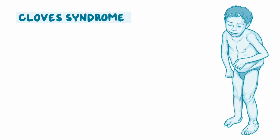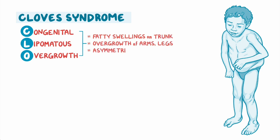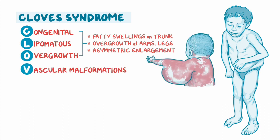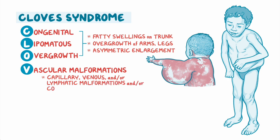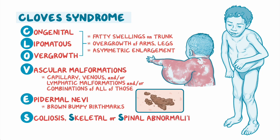CLOVE syndrome involves congenital lipomatous overgrowth, resulting in fatty swellings on the trunk and/or overgrowth of arms and/or legs that leads to asymmetric enlargement, vascular malformations including capillary, venous, and/or lymphatic malformations, and/or combinations of all of those. Epidermal nevi, presenting as brown bumpy birthmarks on the skin, and scoliosis, skeletal, or spinal anomalies.